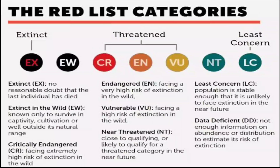The Red List categorizes species into three main subdivisions: Extinct, Threatened and Least Concern. Extinct has been further subdivided into Extinct and Extinct in the Wild. Threatened has been subdivided into three categories: Critically Endangered, Endangered and Vulnerable.